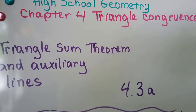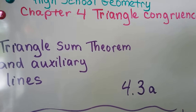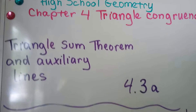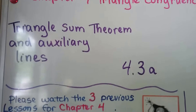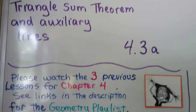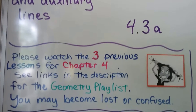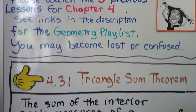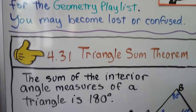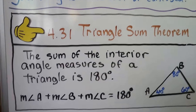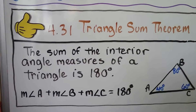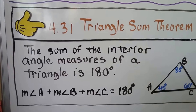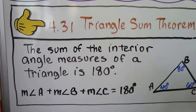Triangle Sum Theorem and Auxiliary Lines — this is 4.3a. We're talking about triangle congruence, and we have three previous videos linked in the geometry playlist in the description. Here's our Triangle Sum Theorem: the sum of the interior angle measures of a triangle is 180 degrees.